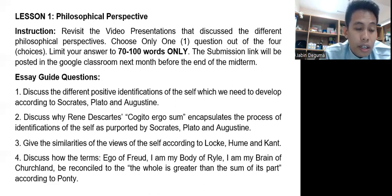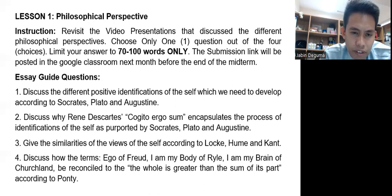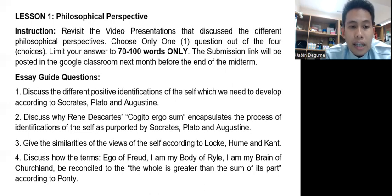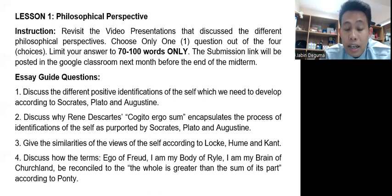Fourth option: discuss how the terms — ego of Freud, I am the body of Ryle, and I am my brain according to Churchland — can be reconciled with the idea that the whole is greater than the sum of its parts according to Merleau-Ponty. I have discussed the answers to these different questions, so what you need to do is revisit the different recorded videos and write your essay limited to 70 to 100 words.